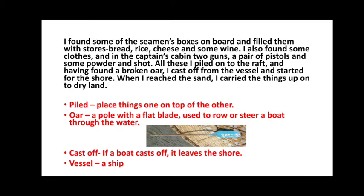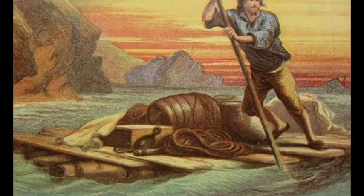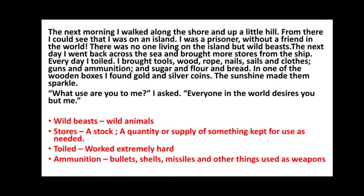All these things he piled — kept one on top of the other — on the raft. He also found a broken oar, which refers to a paddle used to row a boat or raft. He cast off — meaning he left the ship — and started rowing his raft towards the shore of the island. When he reached the sand, the shore of the island, he collected all the things and carried them up onto dry land, a little into the island, so that they would not be carried away by the waves.